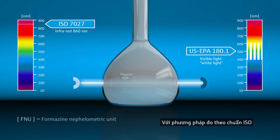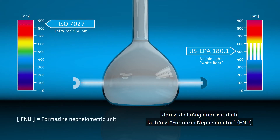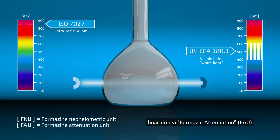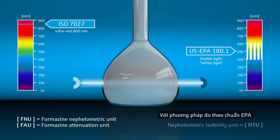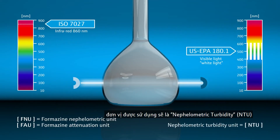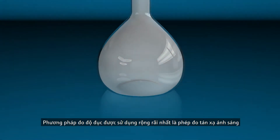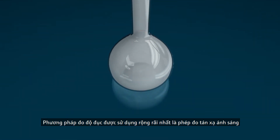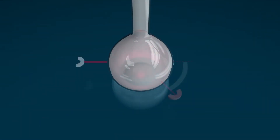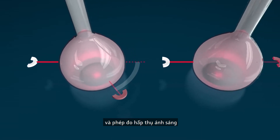For measurement according to ISO, the defined units are Formazine Nephelometric Unit (FNU) or Formazine Attenuation Unit (FAU). For measurement according to EPA, the unit is Nephelometric Turbidity Unit (NTU). The most widely used measurement methods for turbidity are scattered light measurement and attenuation measurement.